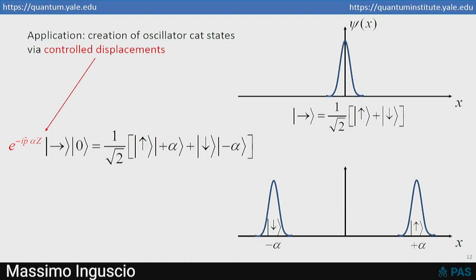The qubit is up and the cavity is in coherent state plus alpha. And it's superposed with the qubit being down and the qubit—the oscillators in the state minus alpha. And what I'd like to produce is a cat state in which the oscillator is in the superposition of those two coherent states, but the qubit is disentangled. So how can we figure out a construction circuit that will do that?